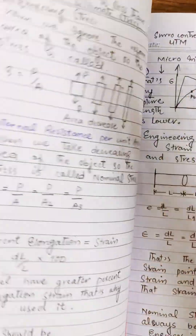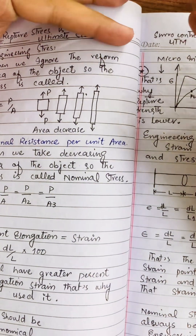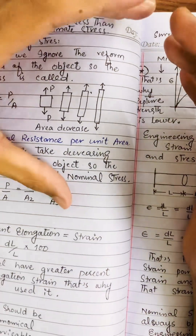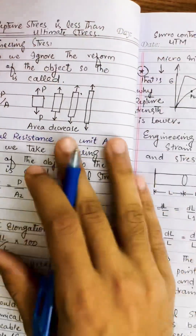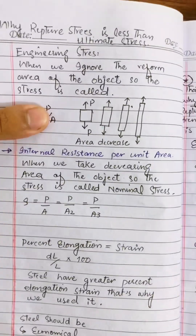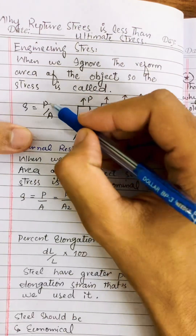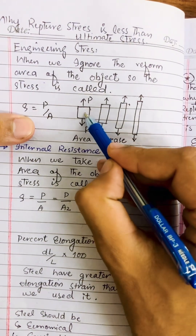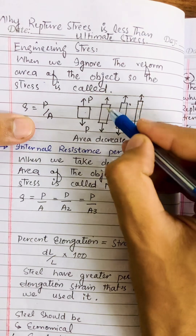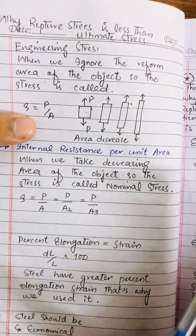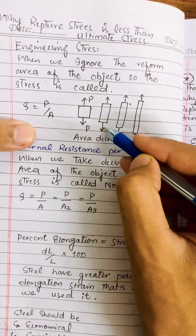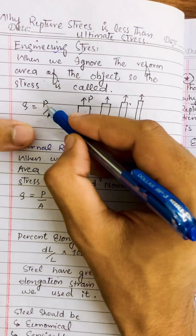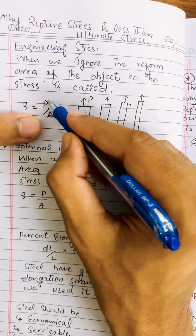To solve this, we must understand two types of stress: engineering stress and true (nominal) stress. Engineering stress occurs when we ignore the decreasing cross-sectional area of the object. As a tensile force elongates the object, its cross-sectional area decreases. If we ignore that decrease and use the original area to calculate stress, we call it engineering stress.